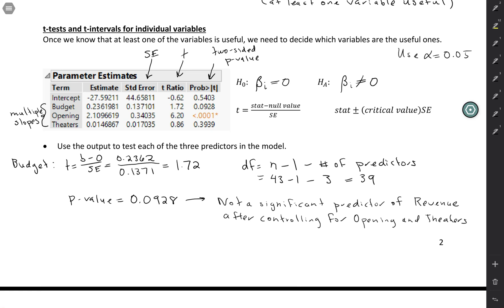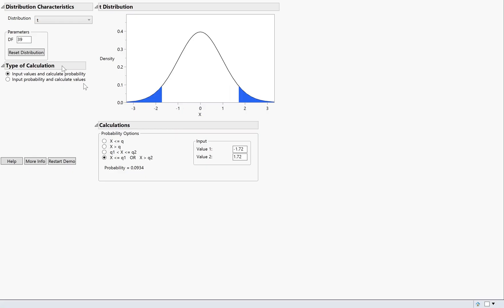We can also come up with a 95% confidence interval for this slope. So I'm just going to use the basic format of a confidence interval. I'm going to start off with the statistic, which in this case is a slope. So .2362 was the slope for budget, plus or minus a t-star value. So for t-star, I need to go back to the distribution calculator.